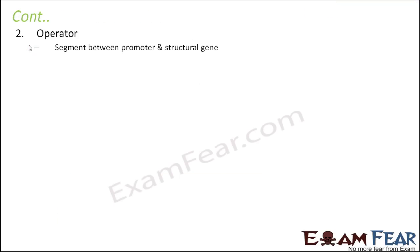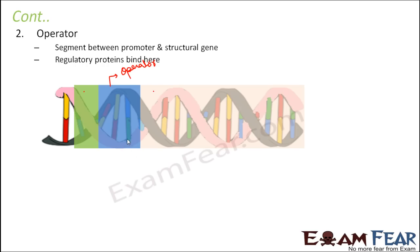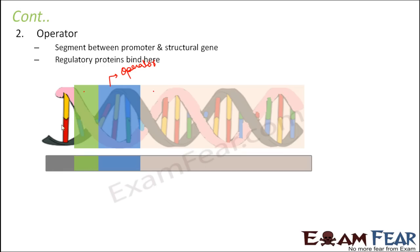The next portion is the operator, which is the segment between the promoter and the structural gene. The blue colored region located between the promoter and the structural genes is the operator. Regulatory proteins bind here. In a simplified diagram: gray shows the entire DNA strand, green is the promoter, blue is the operator, and pinkish color is the structural gene.